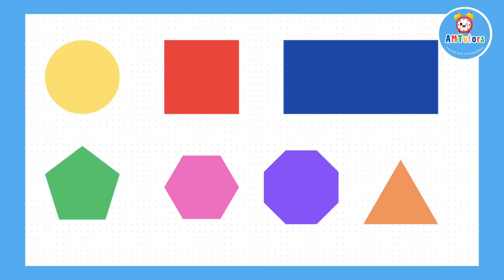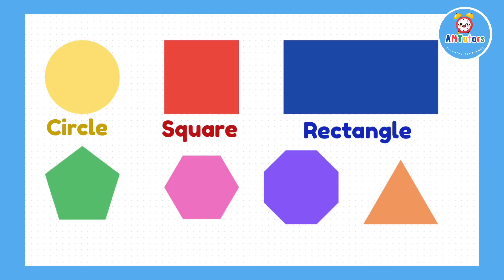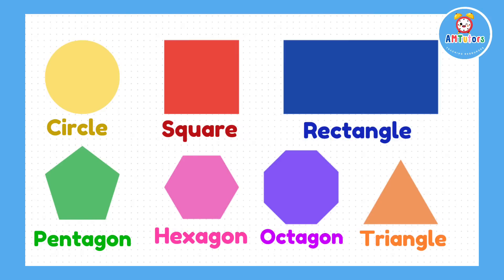Time for the answers. We have a circle, square, rectangle, pentagon, hexagon, octagon, triangle.